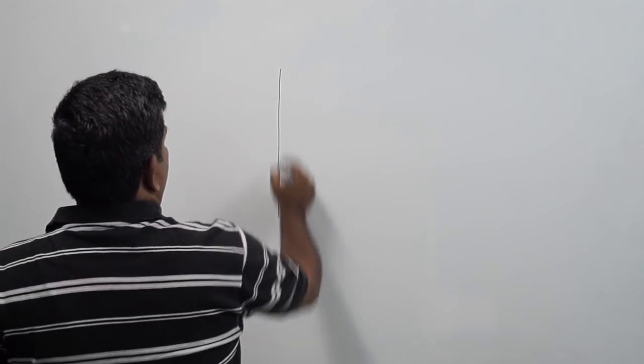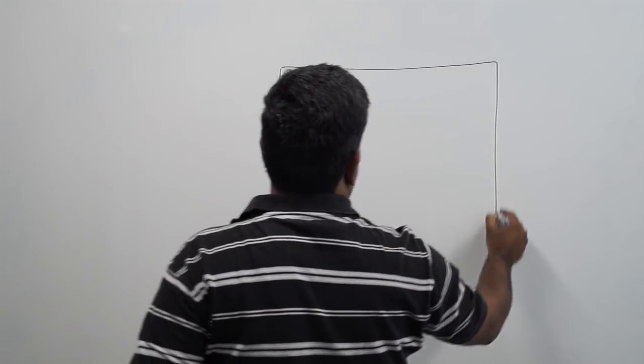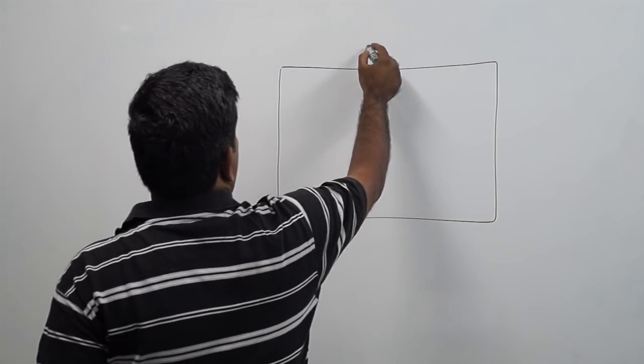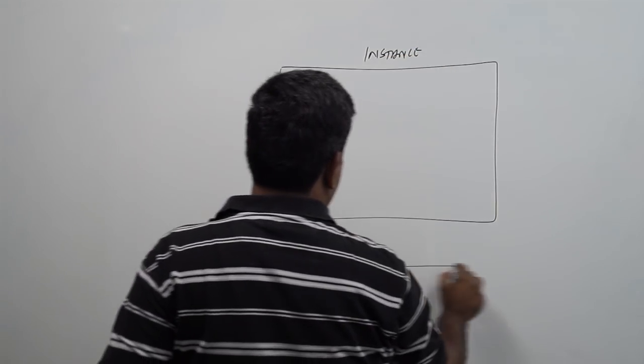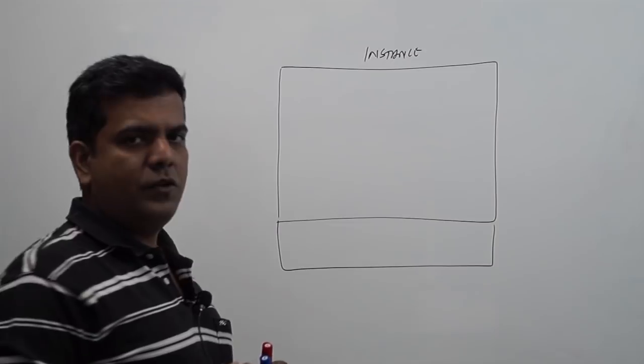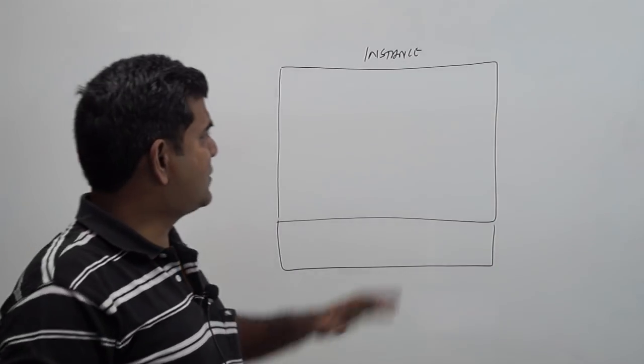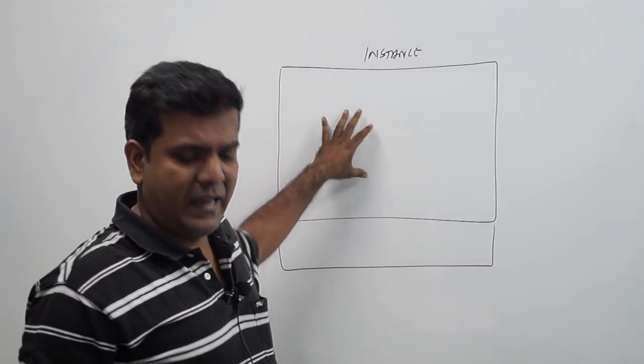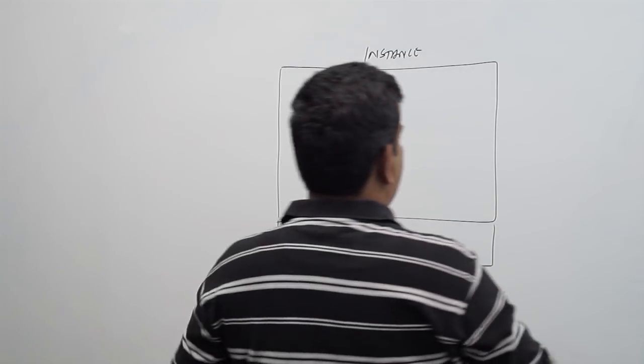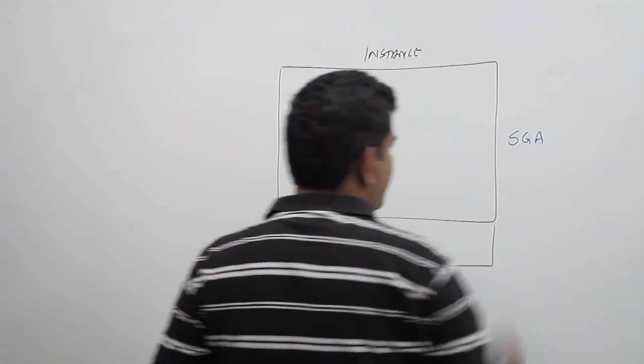In this video, I am going to tell you about the memory structures that are involved in an Oracle database instance. As I told you before, an Oracle instance is made up of two components. There is a memory allocation called as an SGA, otherwise called as a system global area.